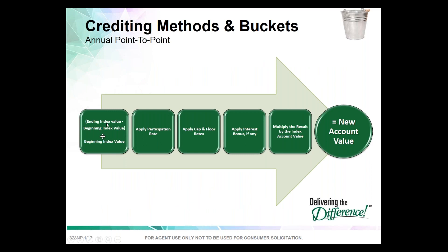The annual point-to-point looks at the ending index value minus the beginning index value, divided by the beginning index value. Say the theoretical index starts at 1,000 and ends the year at 1,100: that's 100 divided by 1,000, which is 10% movement. Then I apply the participation rate — let's say 100% — then apply the cap and floor rates, add the interest rate bonus if applicable, and that gives the index credit applied to the policy.